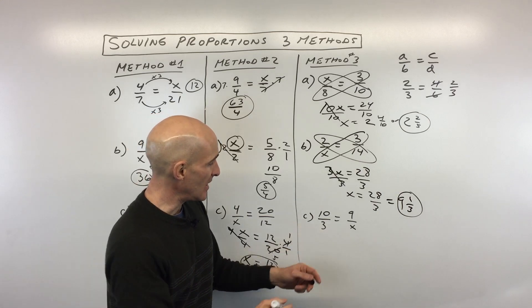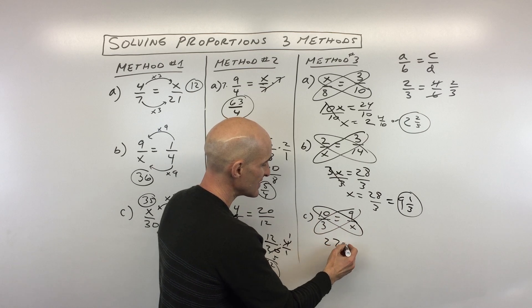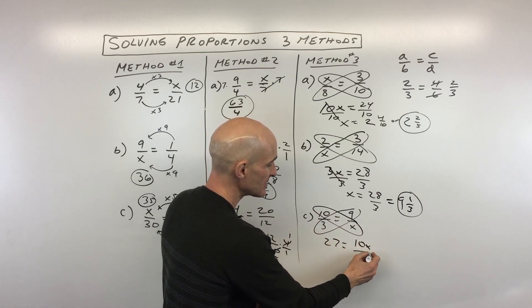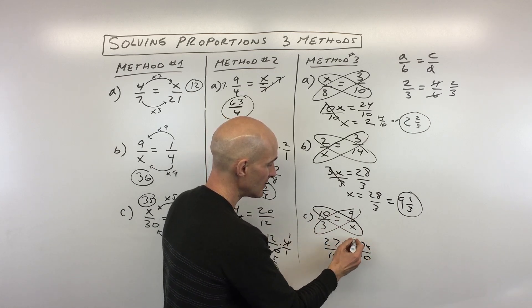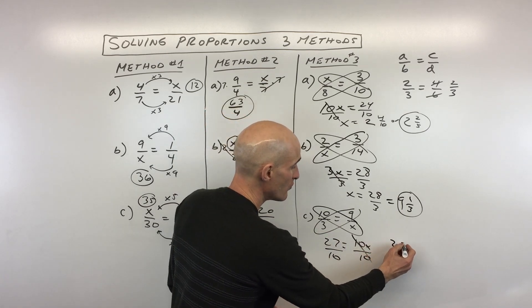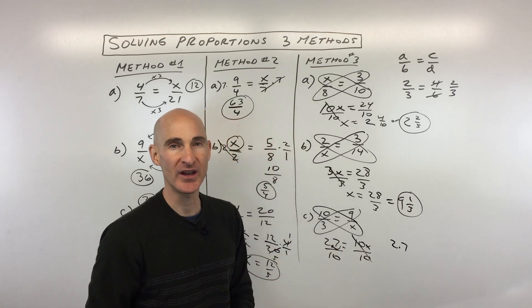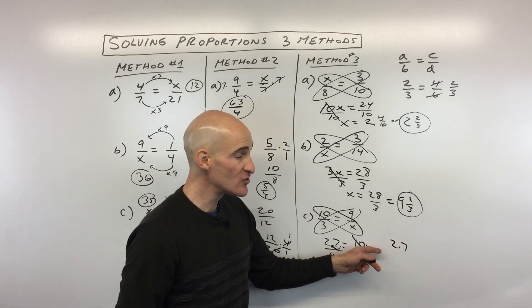Okay, last one. Again, multiplying on the diagonals. 3 times 9 is 27 equals 10 times x. Divide both sides by 10. And 27 divided by 10 is equal to 2.7. When you divide by 10, you just move that decimal one place to the left. Okay? If you're dividing by 100, you move it two places to the left.